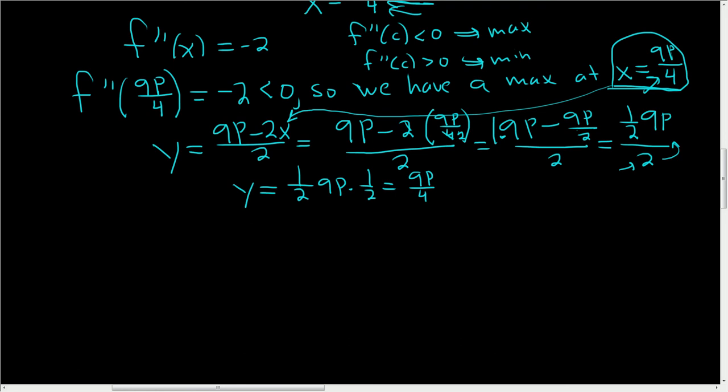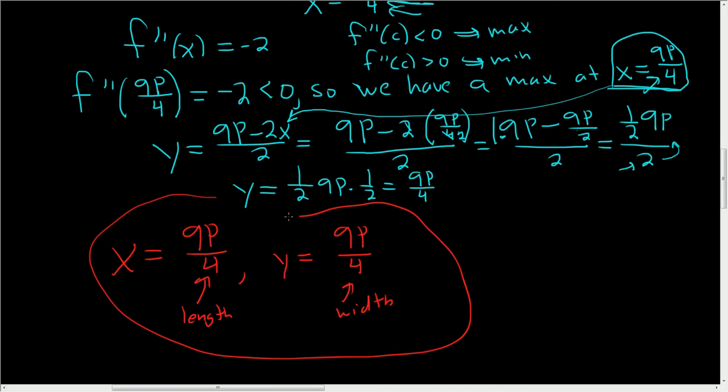So the final answer is x equals 9p over 4, and y equals 9p over 4. And I guess this was our length, and this was our width. And that's it. The moral of this problem is that whenever you have a rectangle, say you had some fence and you wanted to build a backyard, and you only had 100 feet of fence, and you wanted to make the backyard as big as you possibly can, well, the biggest backyard you can make would be a square, where all the sides are the same length.